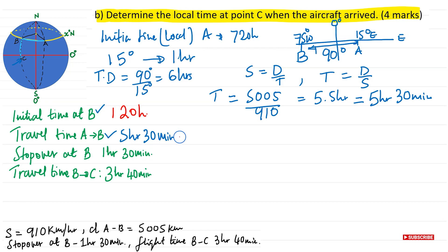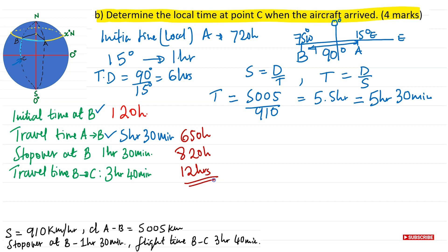Adding up cumulatively at B's local time: start 0120, plus travel time 5h30min = 0650 hours, plus stopover 1h30min = 0820 hours, plus flight B to C of 3h40min = 1200 hours. Therefore the local time at point C when the aircraft arrived is 1200 hours. Thank you for watching — please like, subscribe, and share.